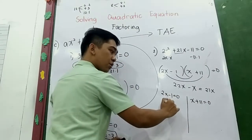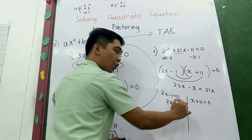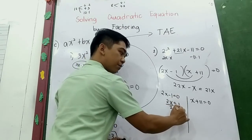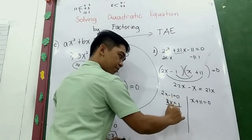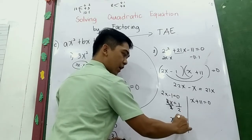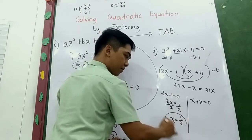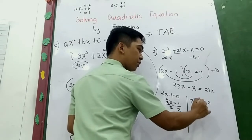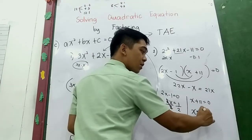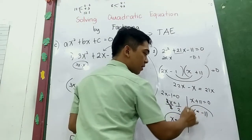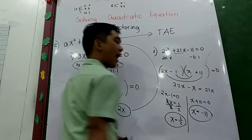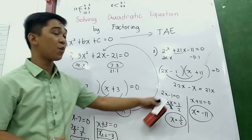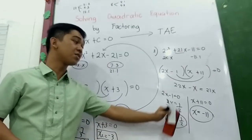Now equate to zero: 2x − 1 = 0 and x + 11 = 0. From the first: 2x = 1, divide by 2, so x₁ = 1/2. From the second: x₂ = −11. You can check whether the answers are correct by substituting back.